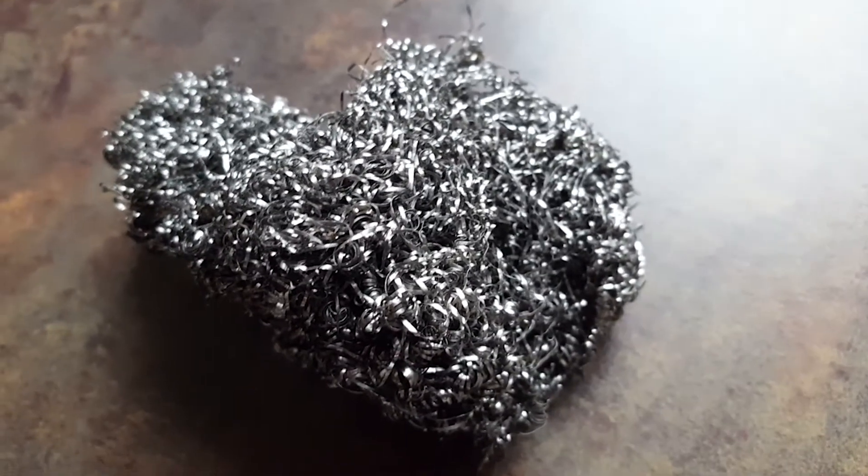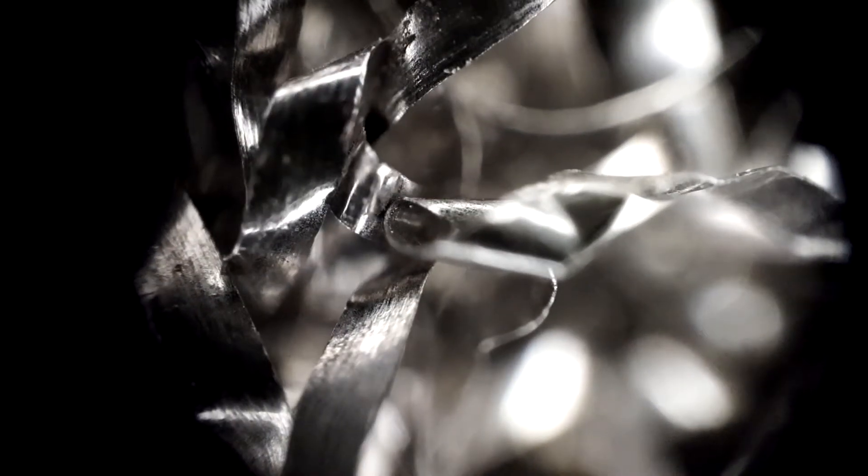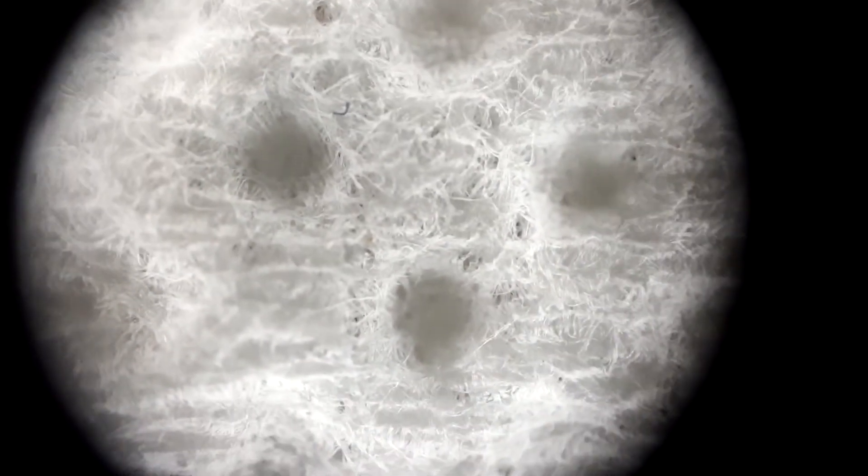This is the steel sponge. This steel slipknot looked like ribbons, look at that. And the good old toilet paper with deep holes inside it, it looks really rough.